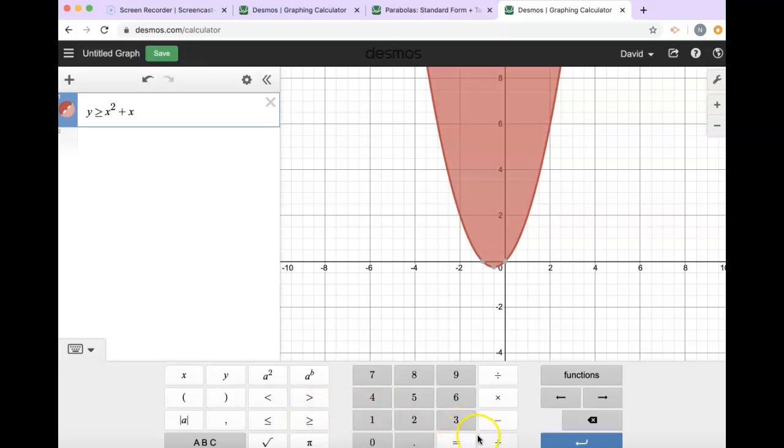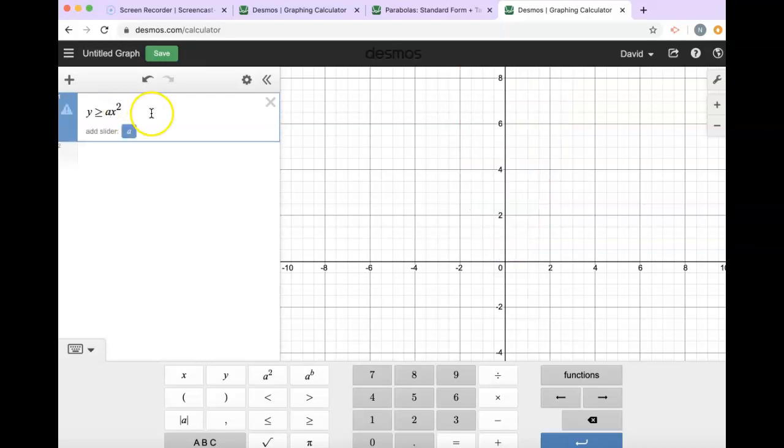We're gonna put in our parameters a, b, and c. And it gives you this option to add sliders, and what those sliders will do is they will allow you to change the values of each of those.